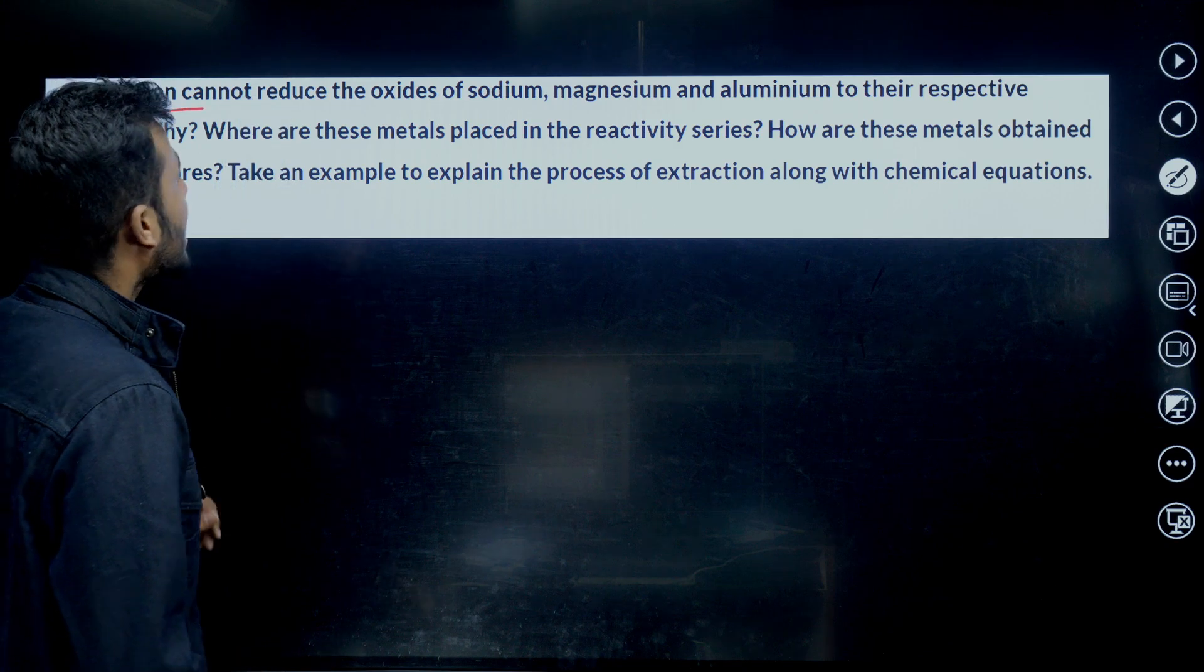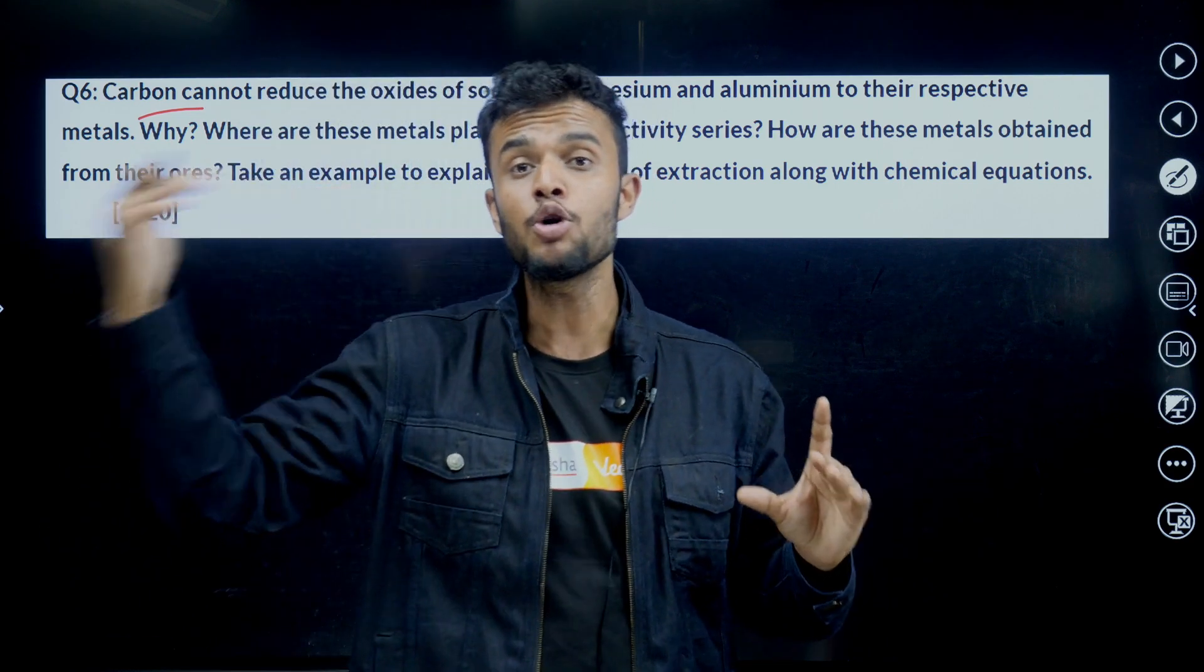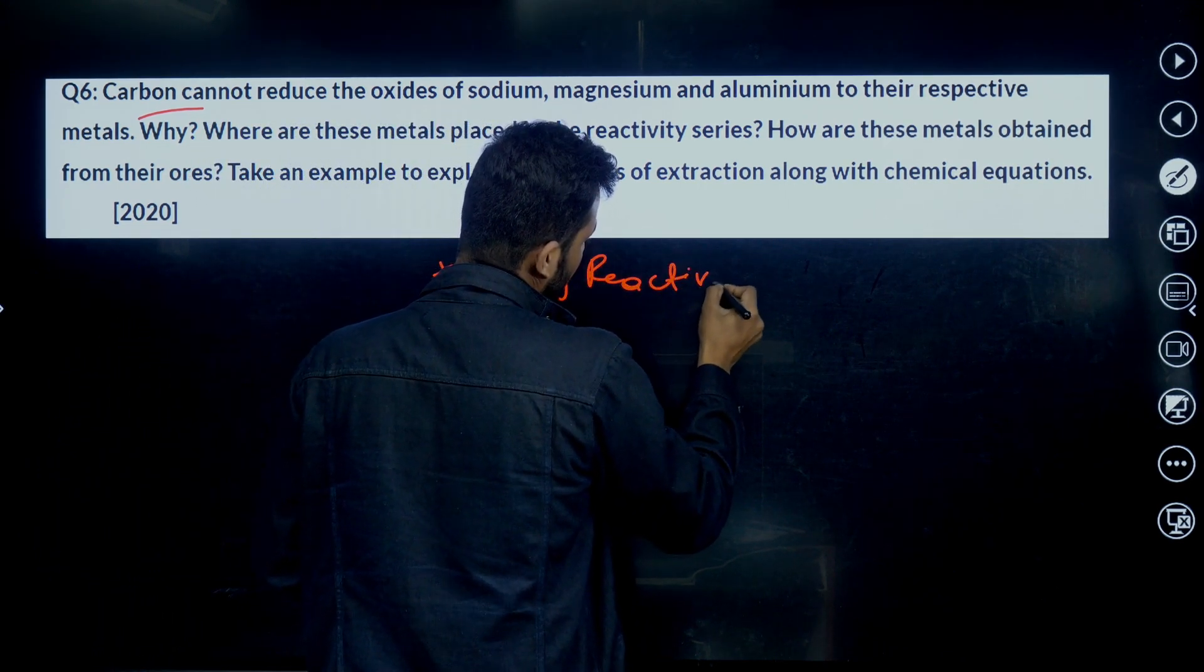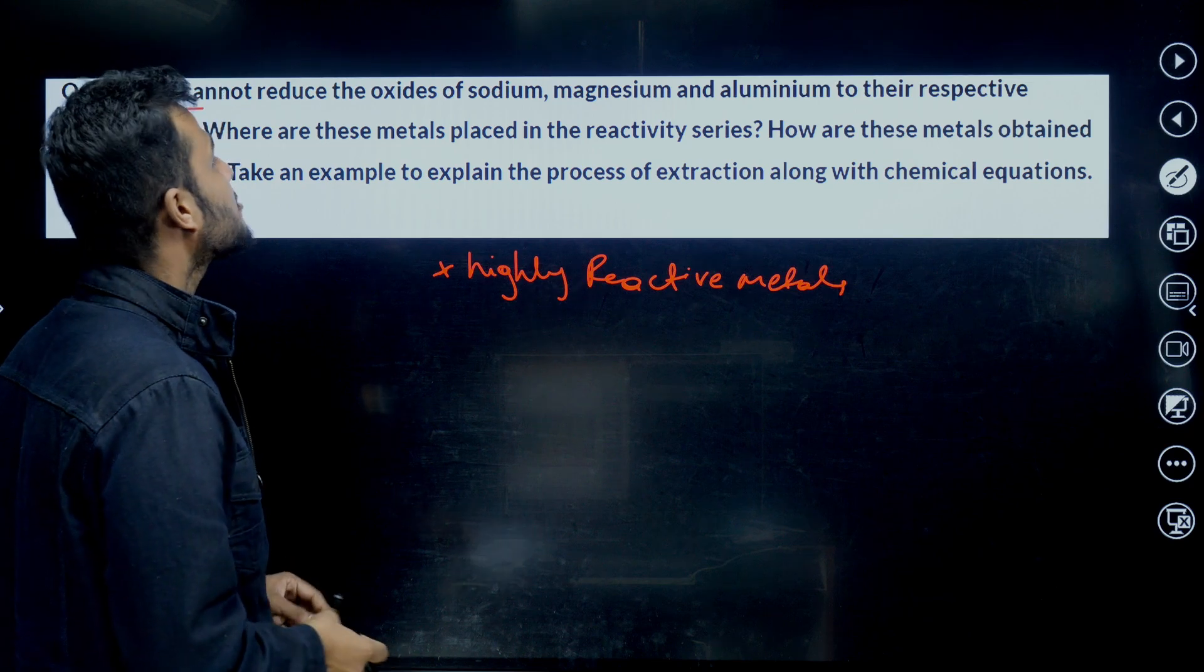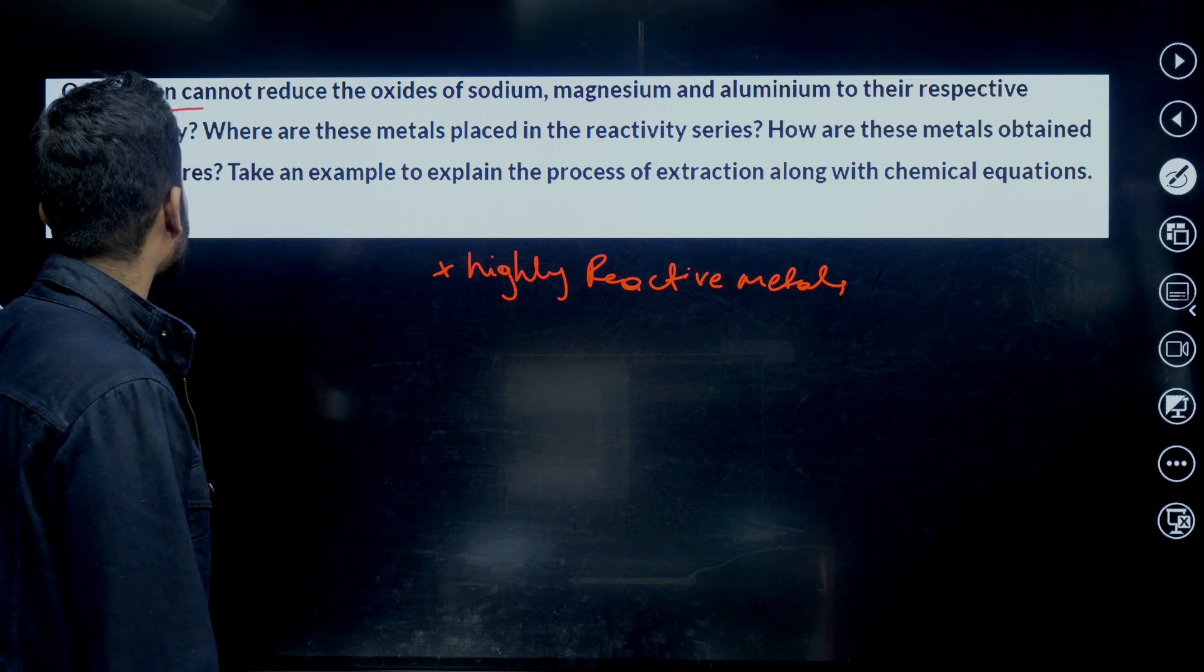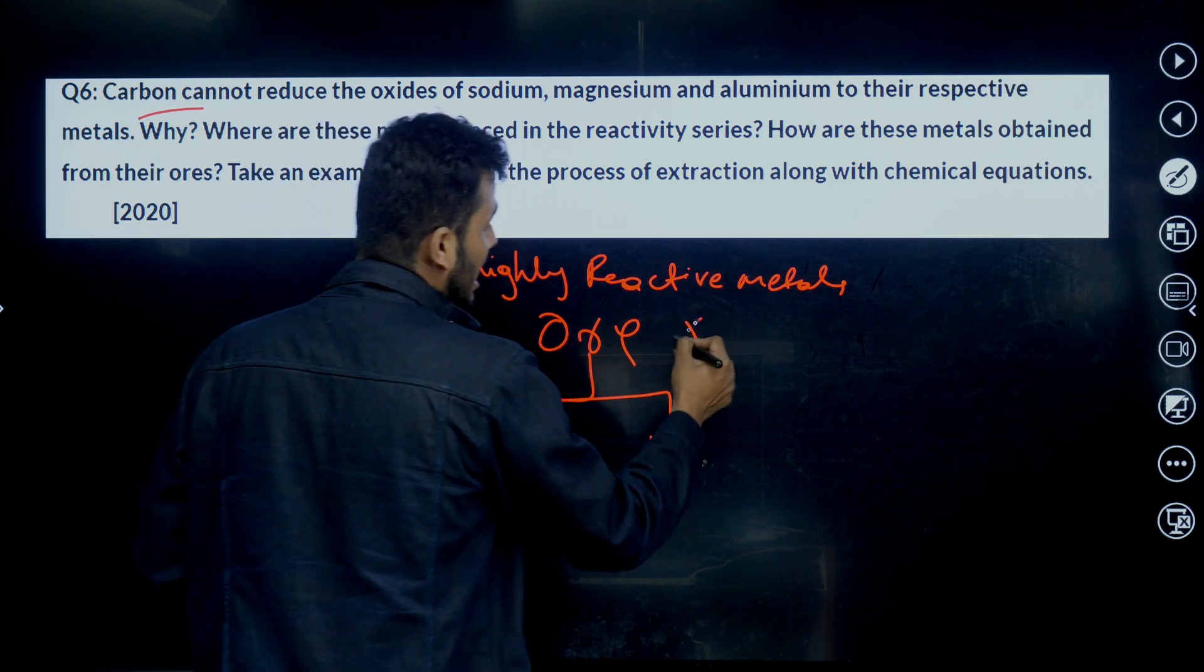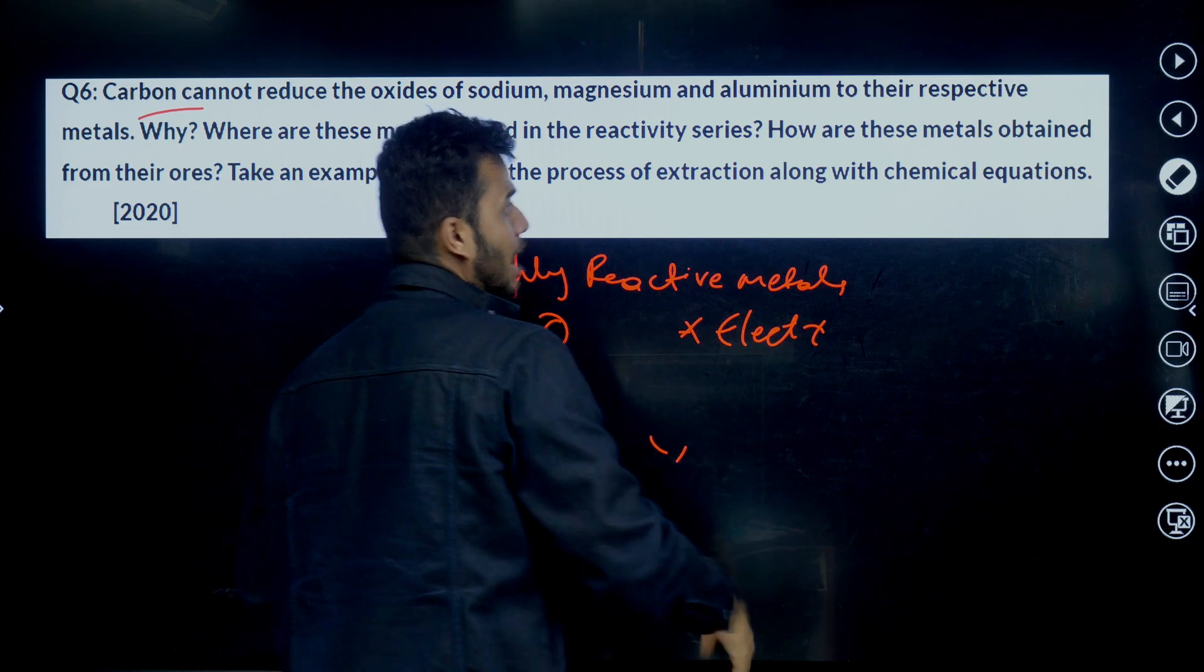Tenth one. Carbon cannot reduce the oxides of sodium, magnesium, aluminum to their respective metals. Why? Because these are highly reactive metals than carbon. These are highly reactive metals or have high reactivity. Then where are these metals placed in the reactivity series? These metals are placed in high reactivity series. High reactive metals in top of the series. How are these metals obtained from their ores? Take an example. Very simple. We need to treat by using electrolytic reduction method. We need to explain this by example.